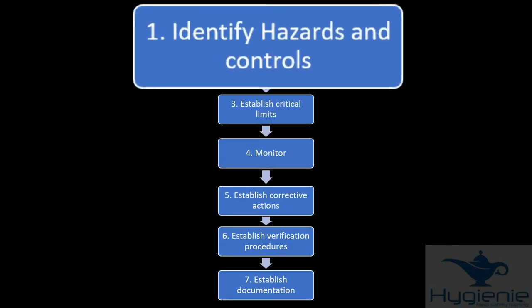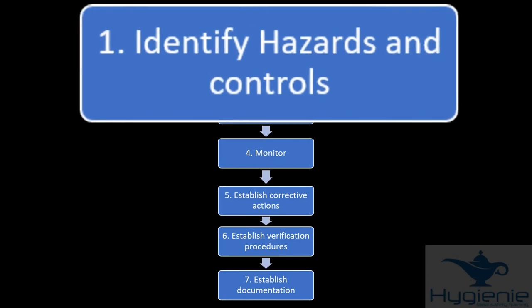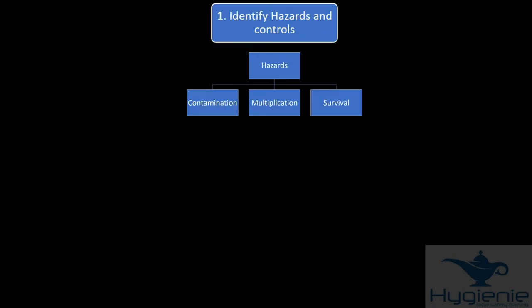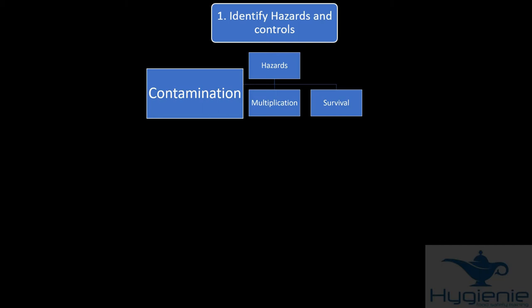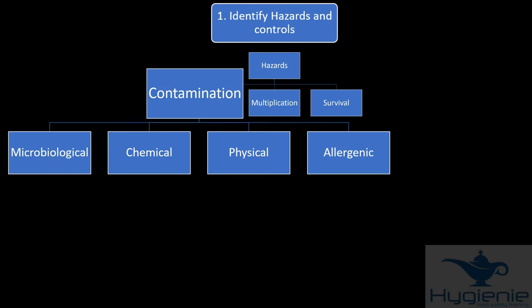As we said hazards can be contamination, multiplication and survival. So let's start with contamination. And examples include microbiological, chemical, physical and allergenic.